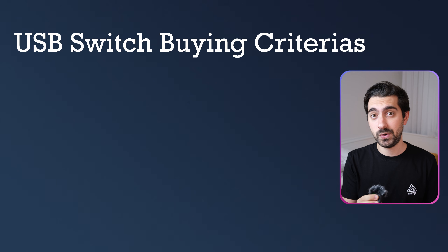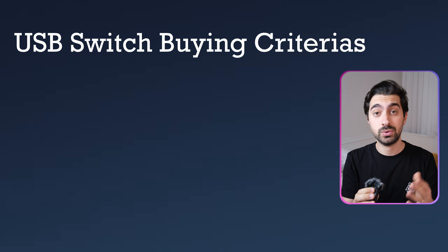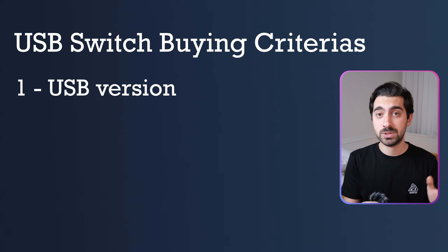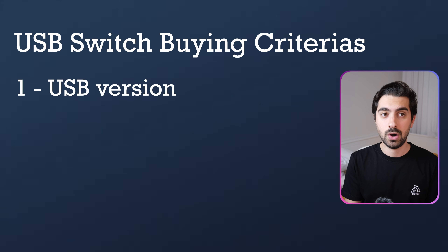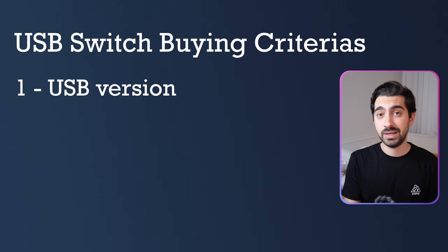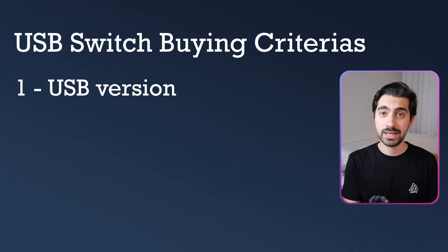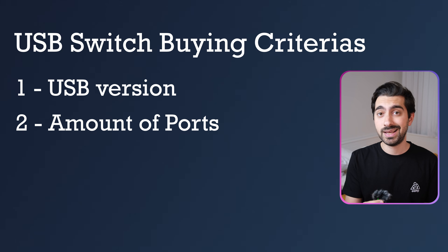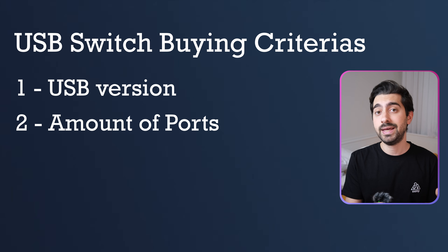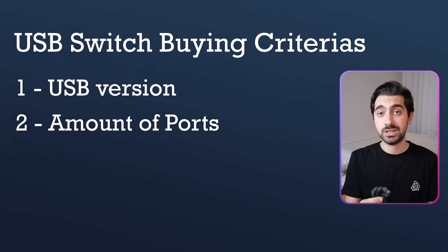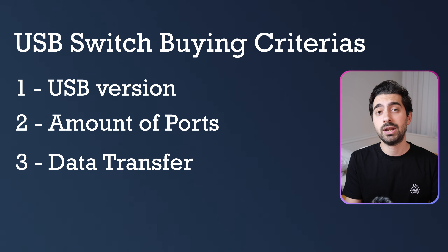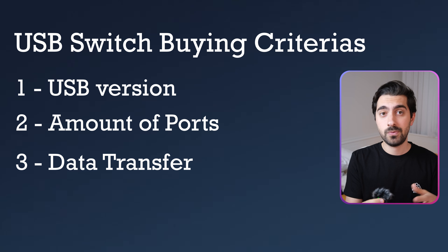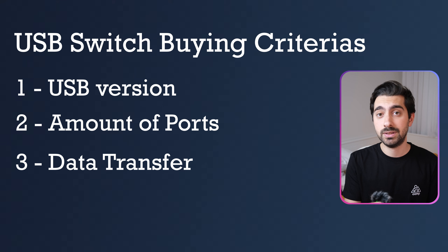Now, if you want to buy a USB switch, there are three criteria to decide first. The first one is the USB version — you can buy USB 2.0, 3.0, and even USB-C. Depending on which version you go with, the price of the switch will highly increase. Another thing that increases the price is the amount of ports you need; some switches have only one port while others have eight or more. The final criterion is data transfer speed — if you want fast transfers, look into premium options with USB-C connectivity supporting 5Gbps or 10Gbps.